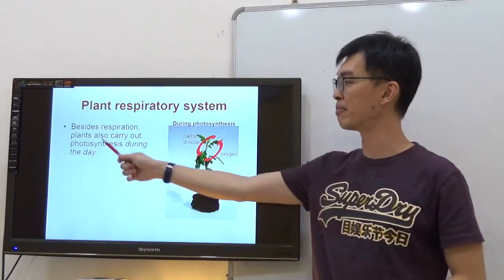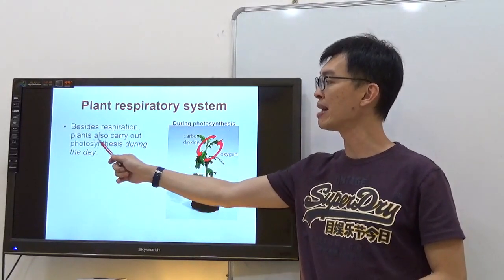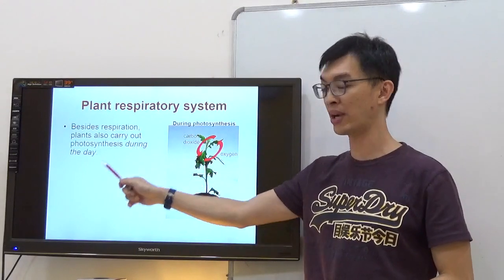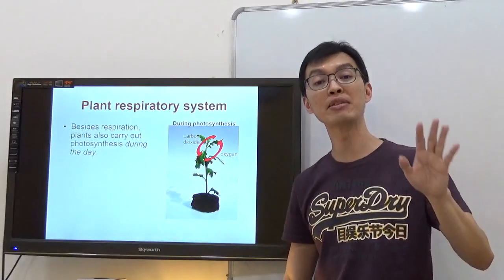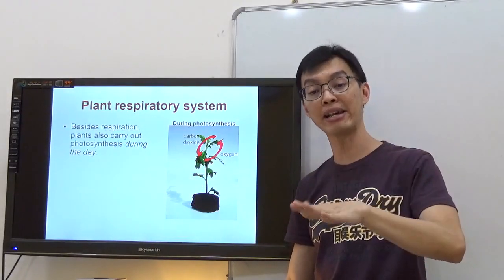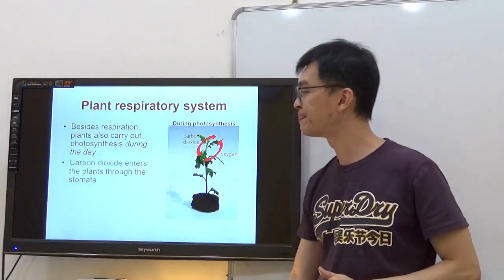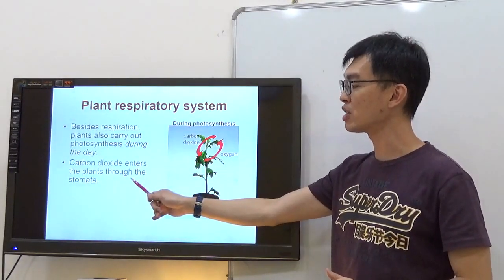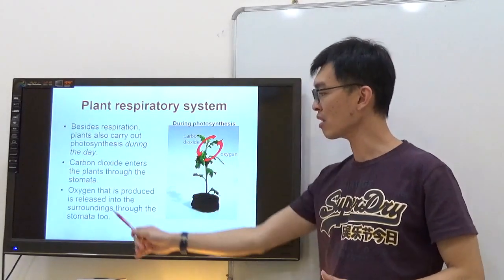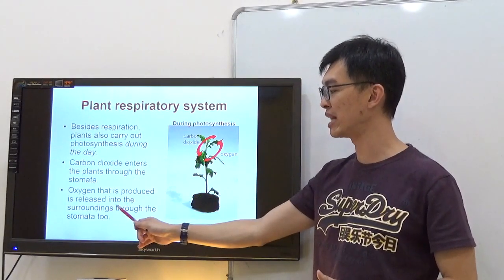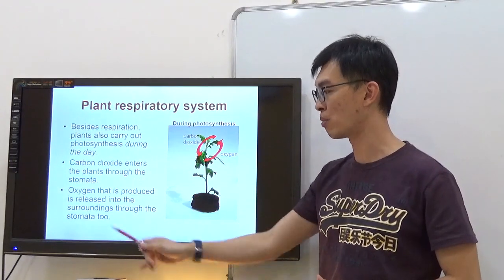During photosynthesis, besides respiration, plants also carry out photosynthesis during the day. During the day means when there is light. Carbon dioxide enters the plant through the stomata. Oxygen that is produced is released into the surrounding through the stomata as well.